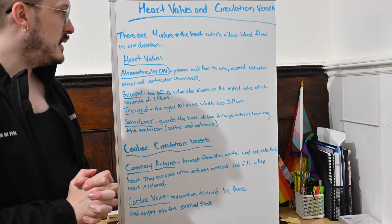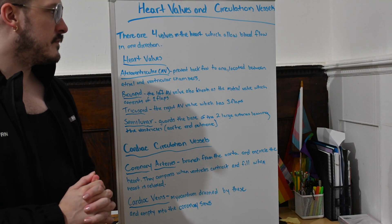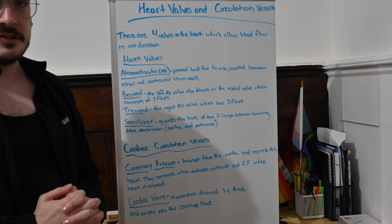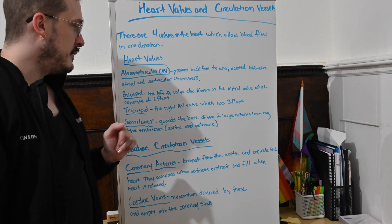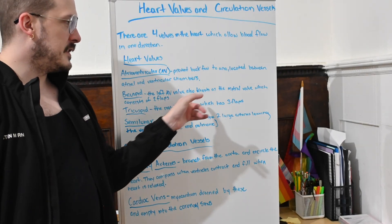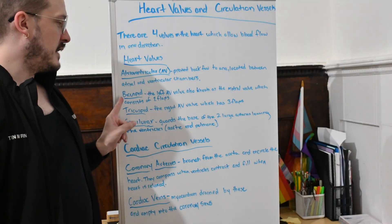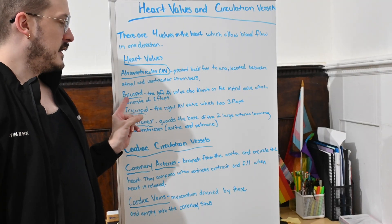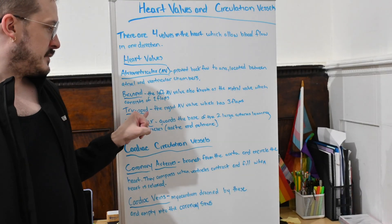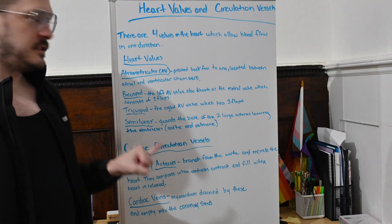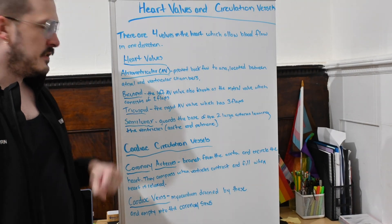There are four valves in the heart that allow blood flow in one direction only. The atrioventricular, or AV valves, prevent backflow to the atria and are located between the atrial and ventricular chambers. The bicuspid valve is the left AV valve, also known as the mitral valve, and consists of two flaps — you can remember this by the prefix 'bi,' meaning two. The tricuspid valve is the right AV valve and has three flaps — remembered by the prefix 'tri,' meaning three.